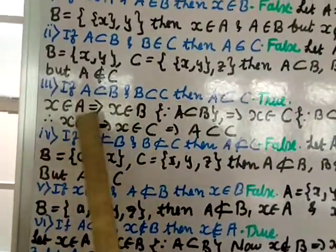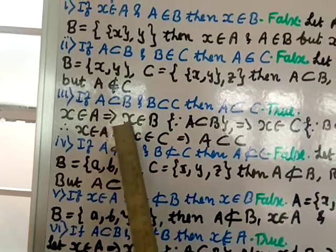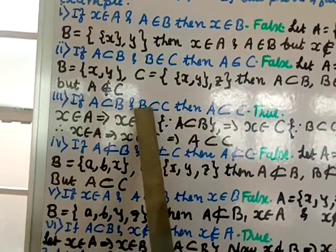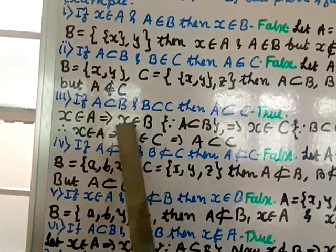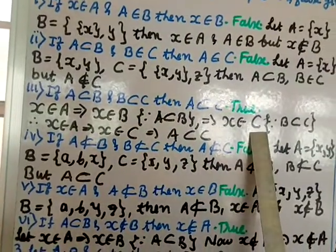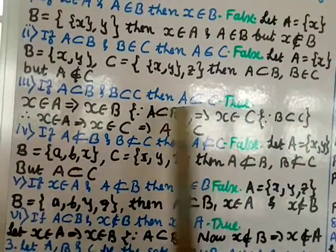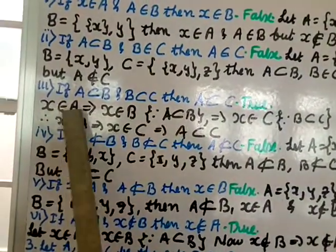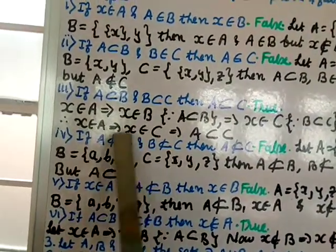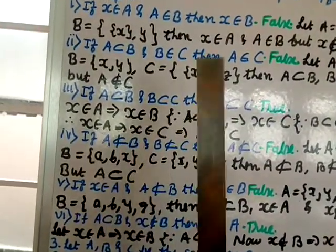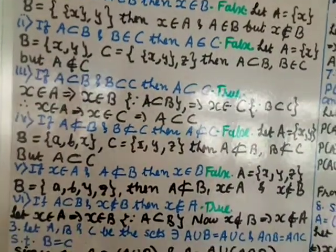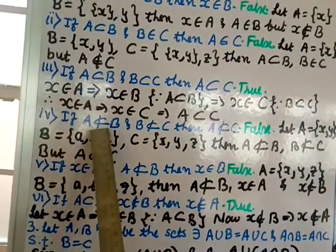Proof of Statement 3: let x ∈ A. Since A ⊆ B, x ∈ B. Since B ⊆ C, x ∈ C. Therefore x ∈ A implies x ∈ C, which means A ⊆ C.